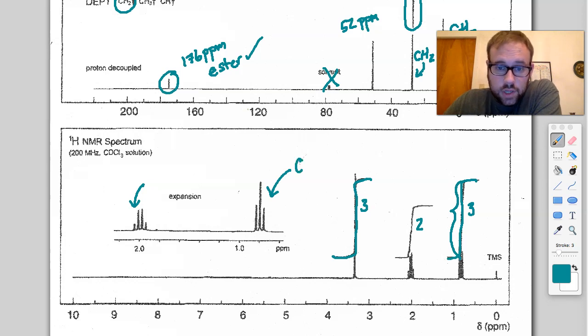So this would be a CH3. And if we take a look at it, a triplet means its neighbor should have two protons. So this is CH3 next to a CH2. And then we would expect that CH2 to be right over here. And that shows up as a quartet, which means we've got a CH3 here.